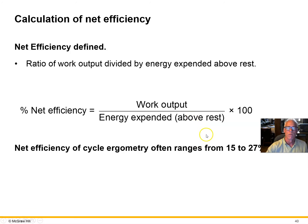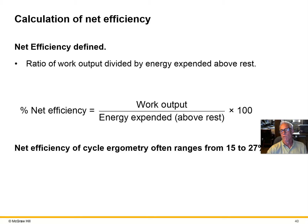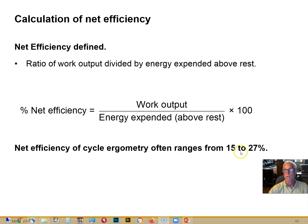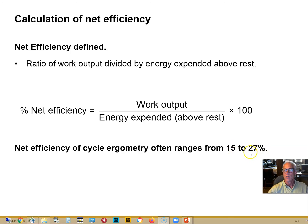To calculate efficiency, we take the work output — the external work or work rate — and divide it by the total energy expended minus the resting equivalent of 3.5 mL/kg/min. That gives us the net efficiency.